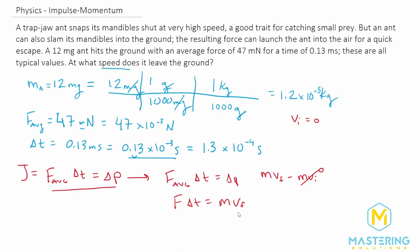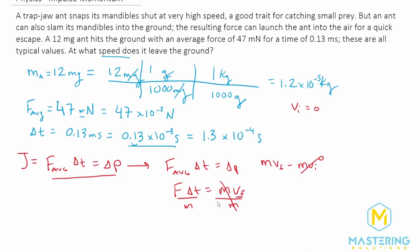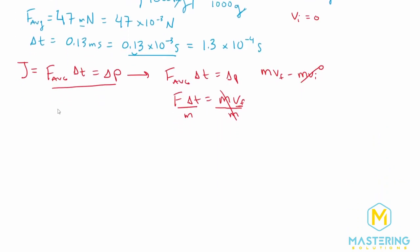And of course, the velocity final is what we're trying to solve for. So let's divide both sides of the equation by the mass. So the final velocity of the ant will be equal to the average force times the change in time divided by the mass of the ant.